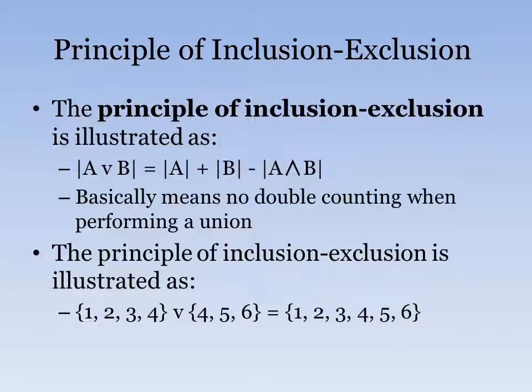We also have a principle called the principle of inclusion-exclusion. And it's illustrated on the slides as you can see, but it basically means there's no double counting when you perform a union of two sets. So for example, if you have one set which is 1, 2, 3, 4, and another set which is 4, 5, 6, the number 4 isn't counted twice in the union of the two sets. It's only 1, 2, 3, 4, 5, 6.